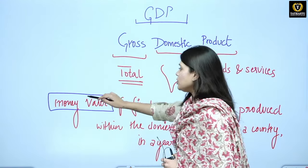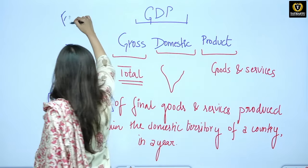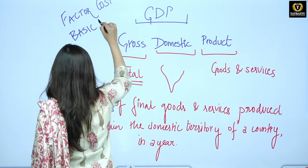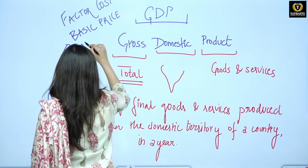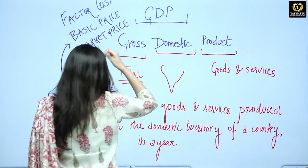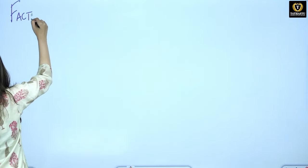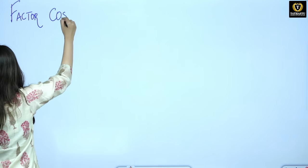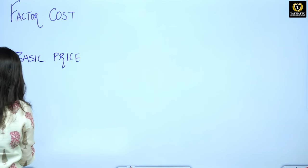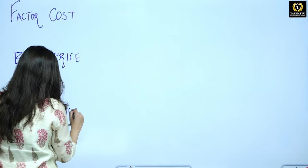Now, when I say money value, this money value can be calculated using the factor cost, the basic price, or the market price. Let us understand the difference between the three: we have factor cost, basic price, and then we have market price.